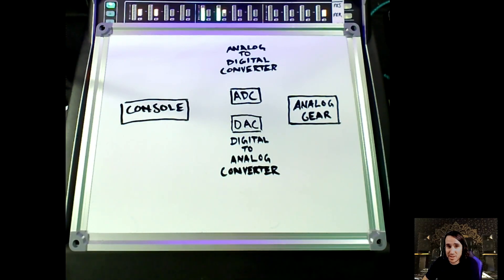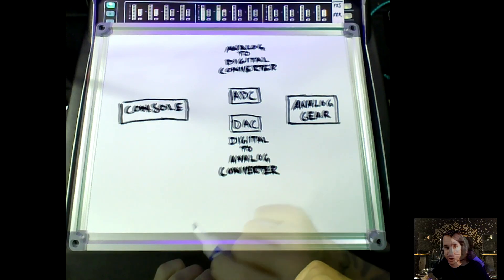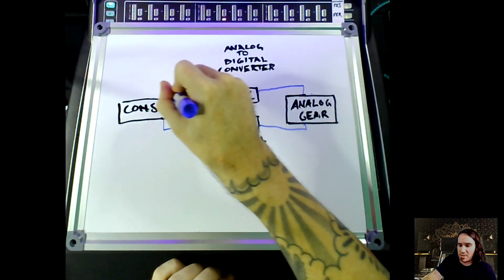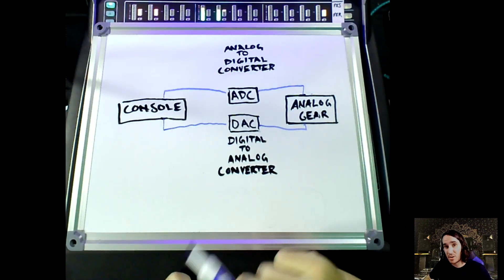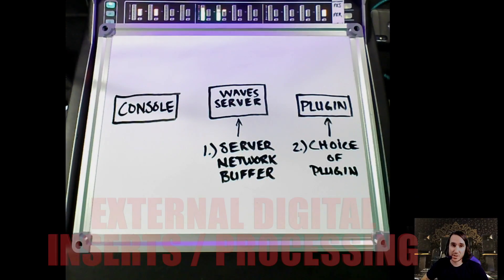Why do we even have to manually delay anything? Anytime you use any external processing — or even digital processors like Waves or UA — you are inducing some latency on that input channel. Regarding analog inserts in the digital realm, anytime you leave the digital realm it takes processing to convert audio from digital to analog and back to digital. This D-to-A then A-to-D conversion always creates latency on digital desks, but not all desks handle this the same way. Some have latency correction and others don't, which means inserting analog gear will slow down that input compared to others.